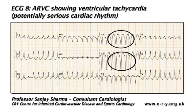Individuals aged below 14 who exhibit T-wave inversions beyond V1 should have annual ECGs. If the T-wave inversions beyond V1 have not resolved by the age of 16, they should undergo investigation for arrhythmogenic right ventricular cardiomyopathy.